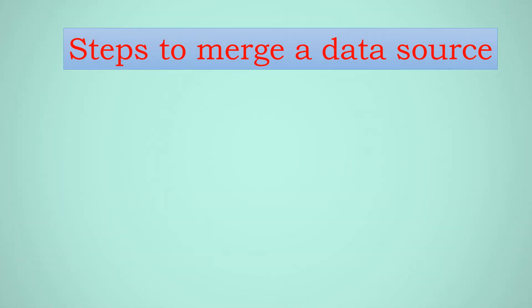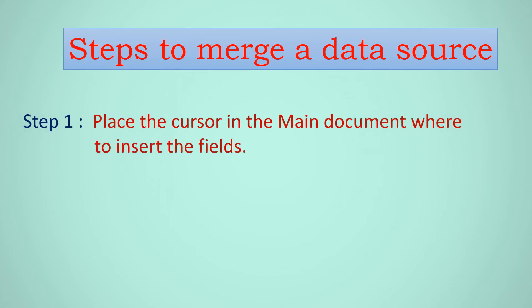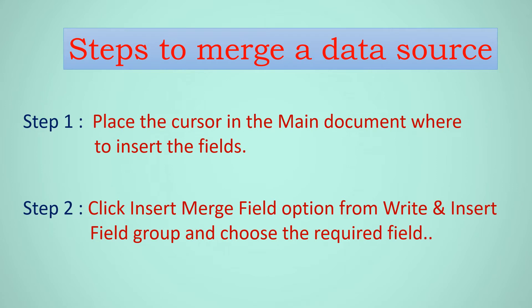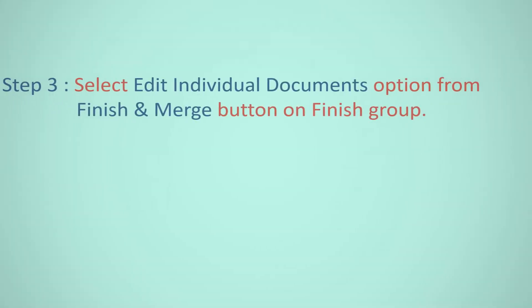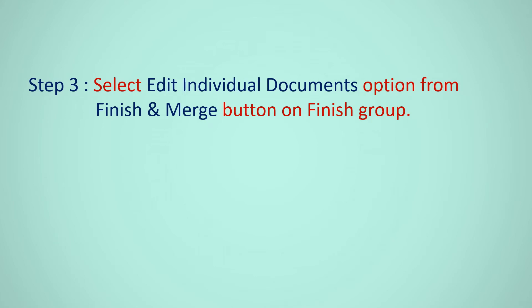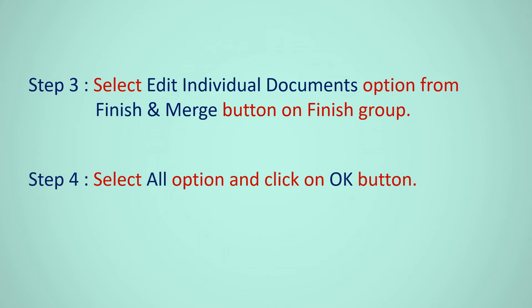Steps to merge a data source: Place the cursor in the main document where you want to insert the fields. Click the Insert Merge Field option from the Write and Insert Fields group, and choose the required field. Select the Edit Individual Documents option from the Finish and Merge button on the Finish group. Select all options and click on OK.